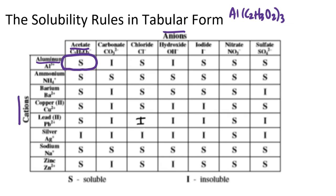In that particular box, we're told that the compound is soluble. That means that if I were to put this compound in water, I would anticipate that it would give me an aqueous solution. Now, to contrast that, suppose I wanted to understand the solubility of something like barium sulfate.